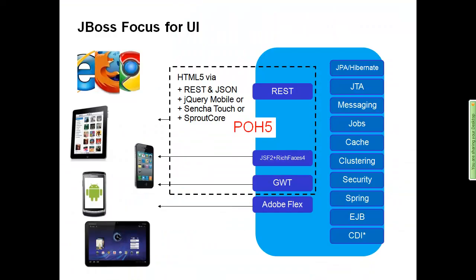Our focus on user interface is across three areas. You can certainly build a user interface with JBoss in a number of different ways — Struts-based applications, Spring MVC, even Adobe Flex. But the one we're focused on here today is what we call the Po5 architecture. Po5 specifically takes an HTML5 client and interacts with the server-side process through REST and JSON primarily. You can augment that HTML5 client with something like jQuery Mobile, Sencha Touch, or Sprout Core to give a richer desktop and mobile client experience.